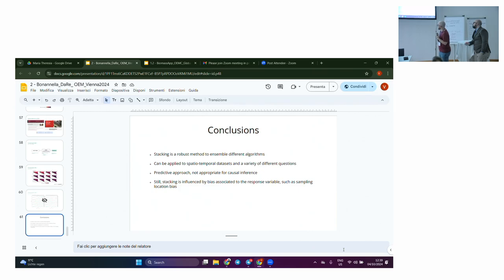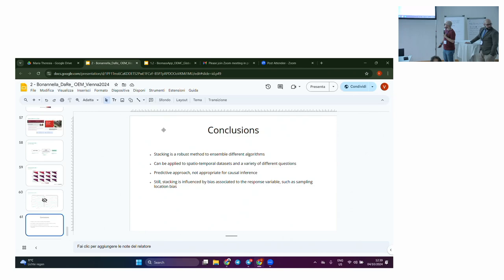And yeah, in conclusion, we feel that stacking is a robust method for forecasting and for spatial temporal approaches. Still, we need to investigate a bit this thing. It's a predictive approach. I don't think it's appropriate for causal inference. And still, I mean, it's a very cool method. But again, it comes with all the problems of all models, right? If you don't have good data, it doesn't work so well. And if you have bias in your data, still, it is influenced. Thank you. And we also have to thank all the departments that were involved in the collection of the data. Because, without them, it would not be possible to do this kind of exercises. Thanks.